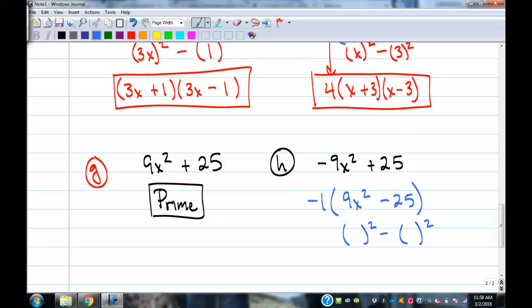And, I can factor that as a difference of squares. What squared is 9x? 3x. What squared is 25? 5. So, our factors, 3x plus 5, 3x minus 5, and then we've got that negative 1 that we pulled out.